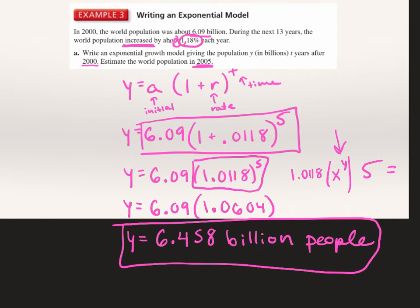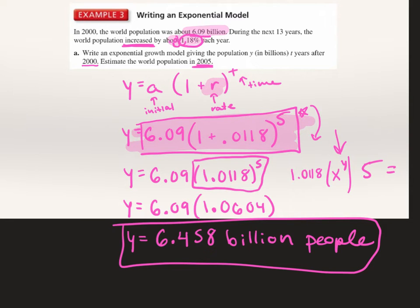From this step down, you're just putting it into the calculator. To get to that step, we plugged in everything given: our initial amount of 6.09, our rate which was the percent changed into a decimal, and our time of 5 years.